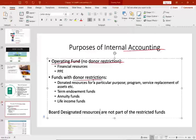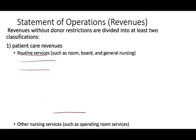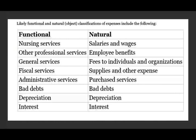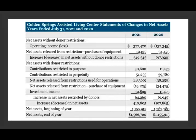Let's take a look at the functional expense statement. For example, the function is nursing services, and you would have salaries and wages, other professional services, employee benefits, general services, and physical services. Administrative services would have purchases listed. Bad debt is bad debt, and depreciation is listed as well. This is the functional and natural classification of expenses. We also have a statement of changes in net asset, which represents the changes in equity.